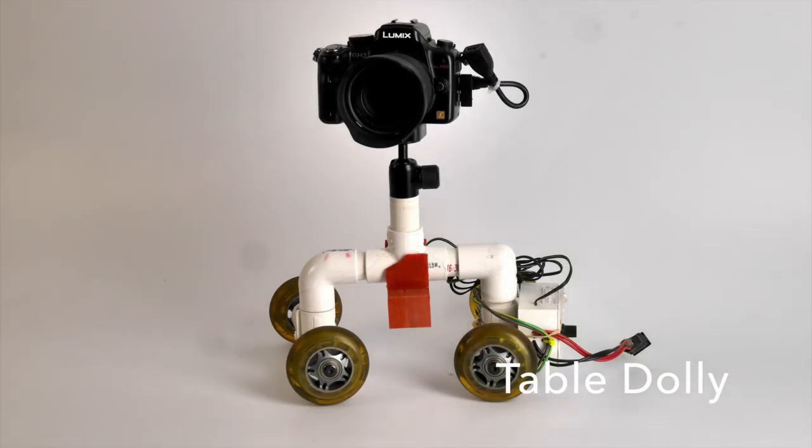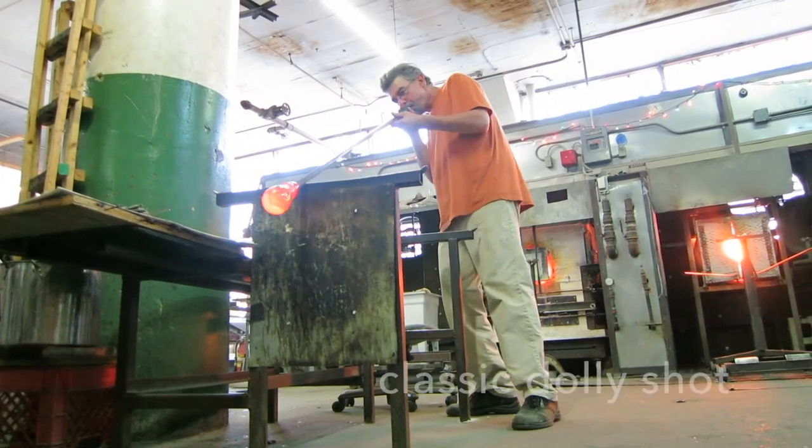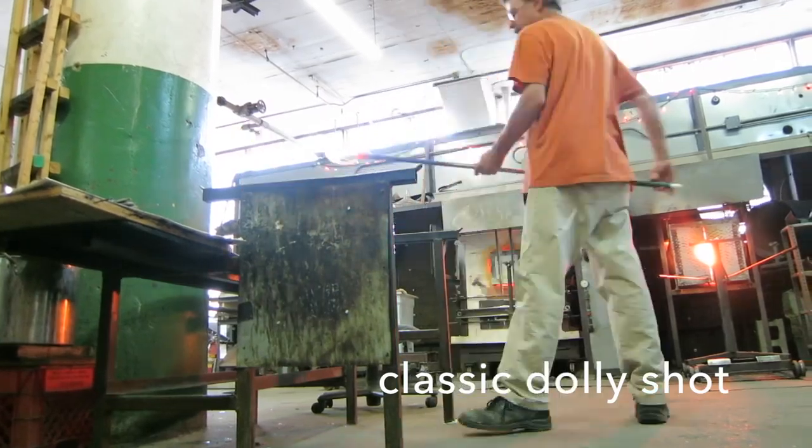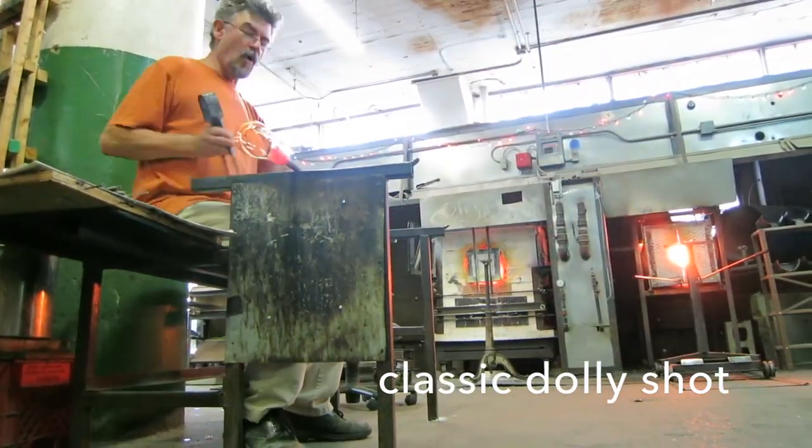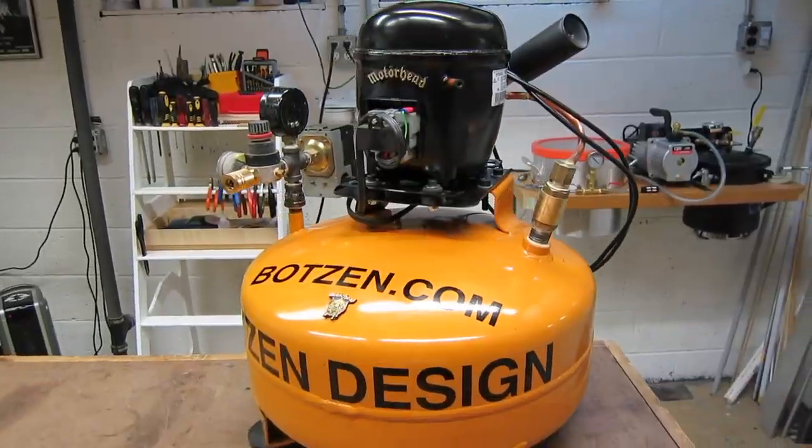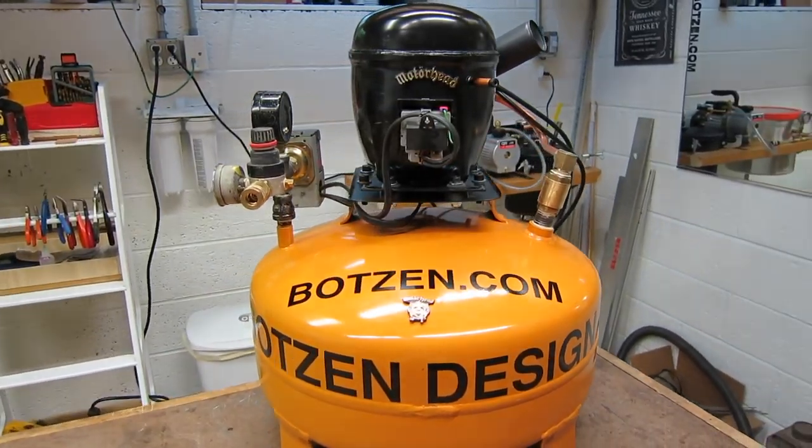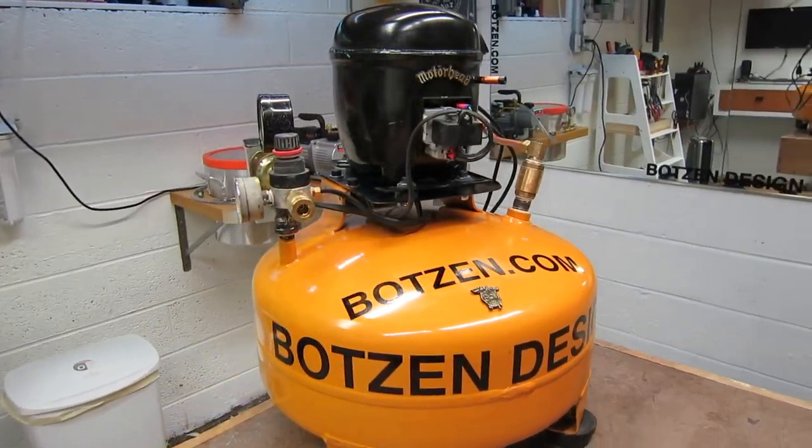I've had a table dolly, or what I call a Rover, for a long time. And it's based on another YouTuber's video from The Frugal Filmmaker, and it allows me to get great tracking shots and other shots from intros in my videos like this.